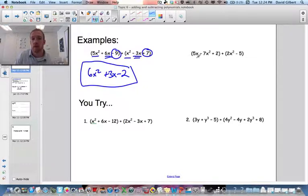So here I have a... I'm going to look at the highest degree term first. So that's a negative 7x². Remember the negative goes with that 7. And a 2x². That gives us a negative 5x².